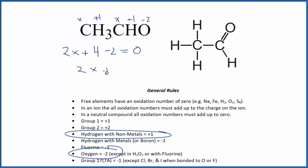2x plus two equals zero. 2x equals negative two, x equals negative one. And that would be the average oxidation number for the carbons here in acetaldehyde.